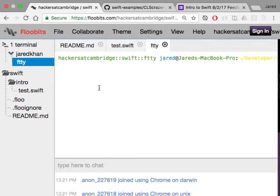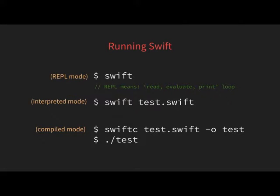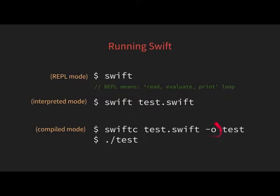There are a few ways you can run Swift. The first is REPL mode — REPL stands for Read Evaluate Print Loop. If you run Swift in your command line, it gives you an interactive prompt. There's also interpreted mode, where you write 'swift' followed by a filename and it runs each line of your Swift file one at a time. And there's compiled mode using 'swiftc', which compiles your entire file into an executable.